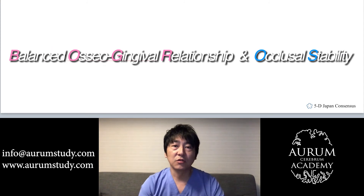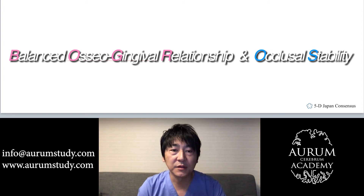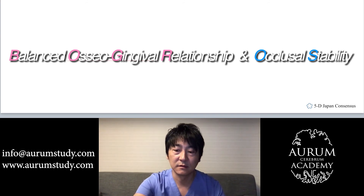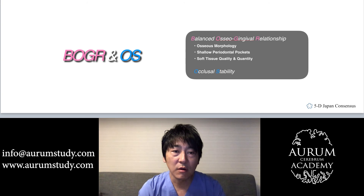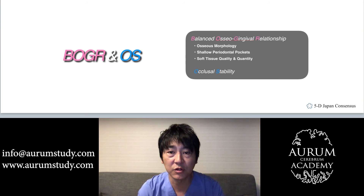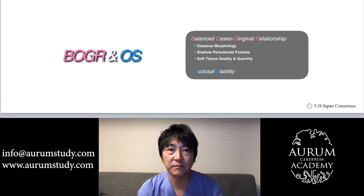This is our 5D Japan original consensus: Balanced osseo-gingival relationship and occlusal stability. We call it BOGR and OS. For BOGR, we emphasize the importance of osseous morphology, shallow periodontal pockets, and soft tissue quality and quantity. For these points to be stable in the long run, we consider the importance of occlusal stability.